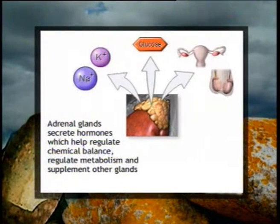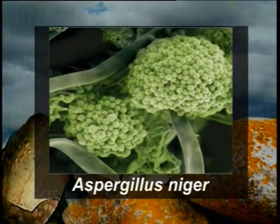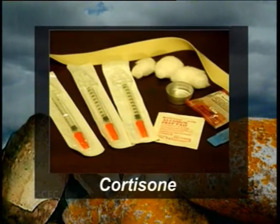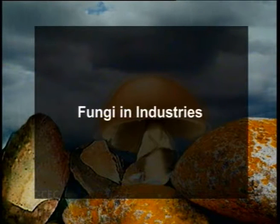Extraction of steroids from biological systems is highly expensive, but a variety of fungi can synthesize these steroids. For example, fermentation of plant glycosides by Rhizopus nigricans and Aspergillus niger is responsible for the synthesis of the steroid hormone cortisone. Fungi also serve as a source of vitamins — many yeasts including Saccharomyces cerevisiae are a rich source of vitamin B complex. A vitamin D precursor called ergosterol is prepared from some molds and yeasts, and Rhodotorula gracilis is a source of vitamin A.